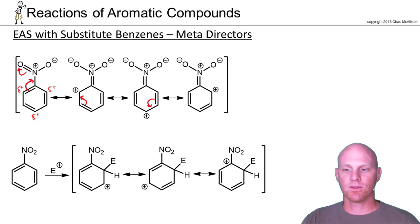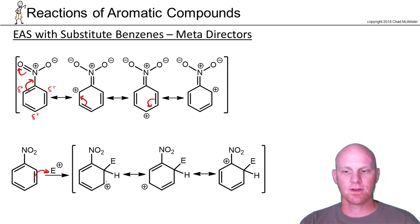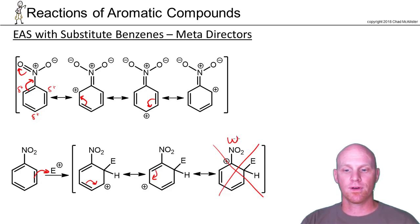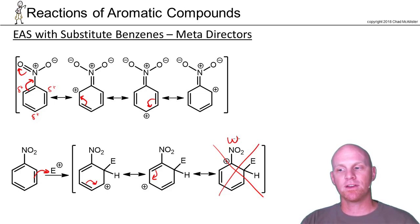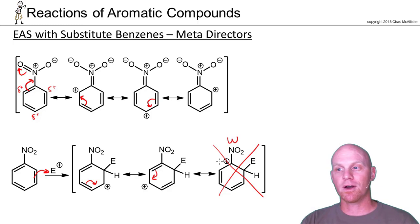We can also look at what would happen if we added the electrophile ortho rather than meta. Adding ortho, we look at where the positive charge is shared among resonant structures, and one of them is a bad structure — the positive charge ends up on the carbon right next to the electron withdrawing group. If you substitute the electrophile ortho or para, that's what happens; it's very bad. Whereas if you go meta, the positive charge will never end up right next to the electron withdrawing group, so it's not quite as unstable. It's not that meta is so good — it's that ortho and para are so bad.